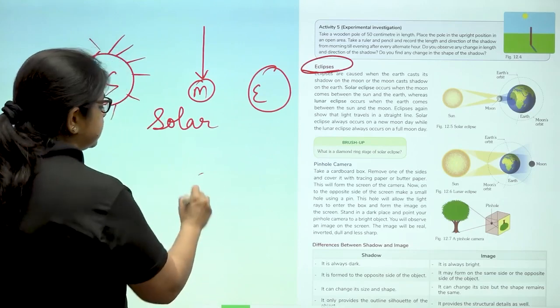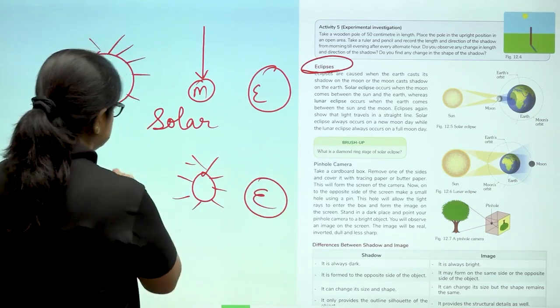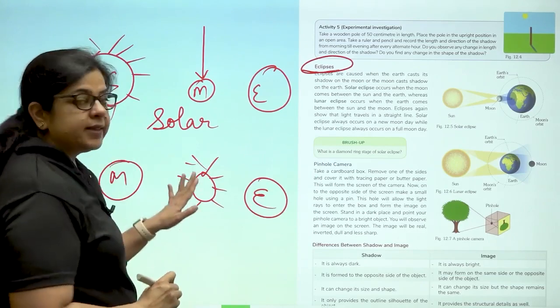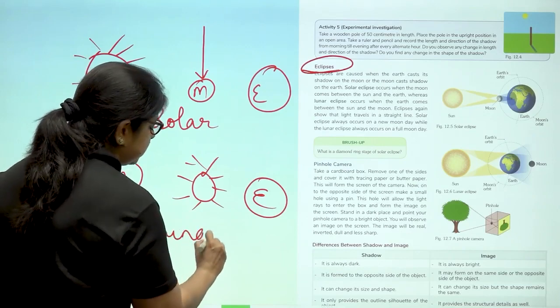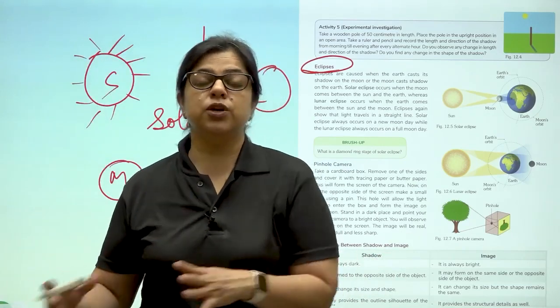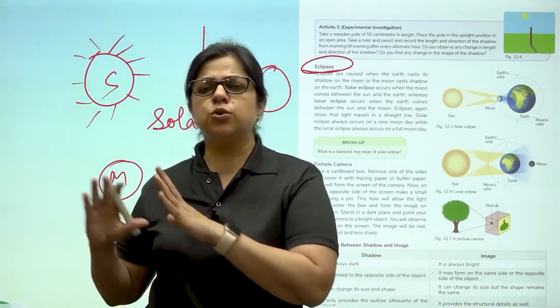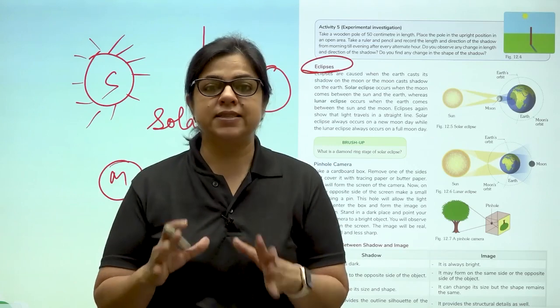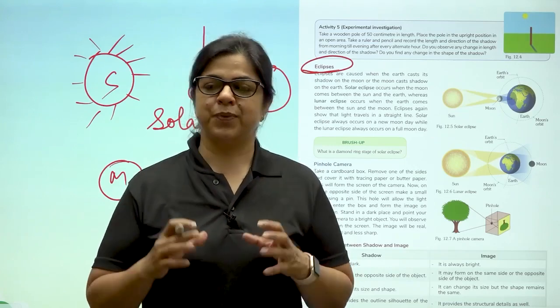Now when the sun comes between the earth and the moon, then what happens? From the earth, we are not able to see the moon. This is called lunar eclipse. At times of lunar and solar eclipse, what are we advised to do? We are advised to not look at the heavenly bodies directly because a lot of radiation is coming out.